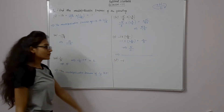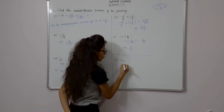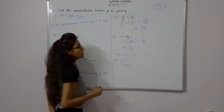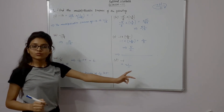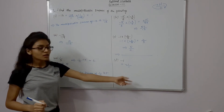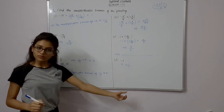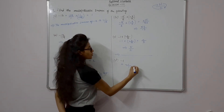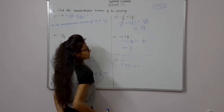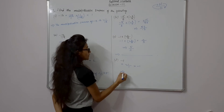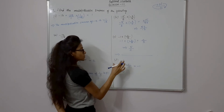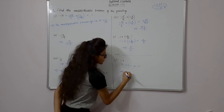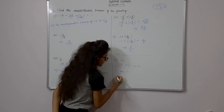Sixth part is minus 1. We can write minus 1 as minus 1 upon 1. If we take its reciprocal, it will again be minus 1 upon 1, which is minus 1. So the multiplicative inverse of minus 1 is minus 1.